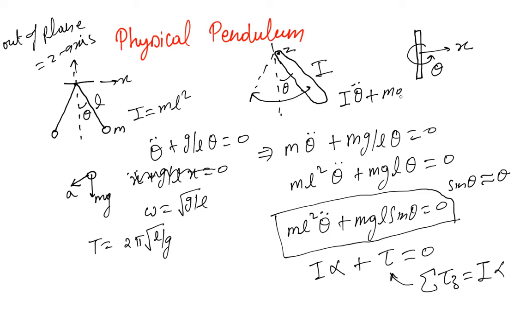And all we have to do is write Iθ̈ + mga sin(θ) = 0. Just a word of caution here now this has been written like that.